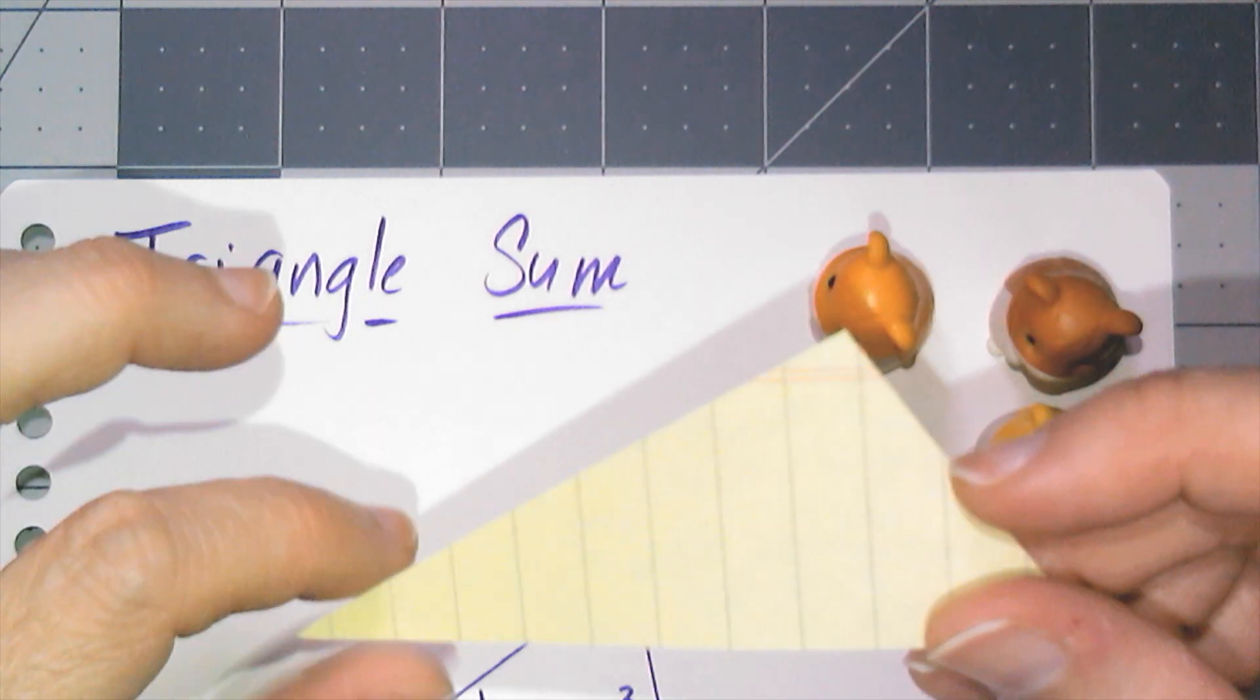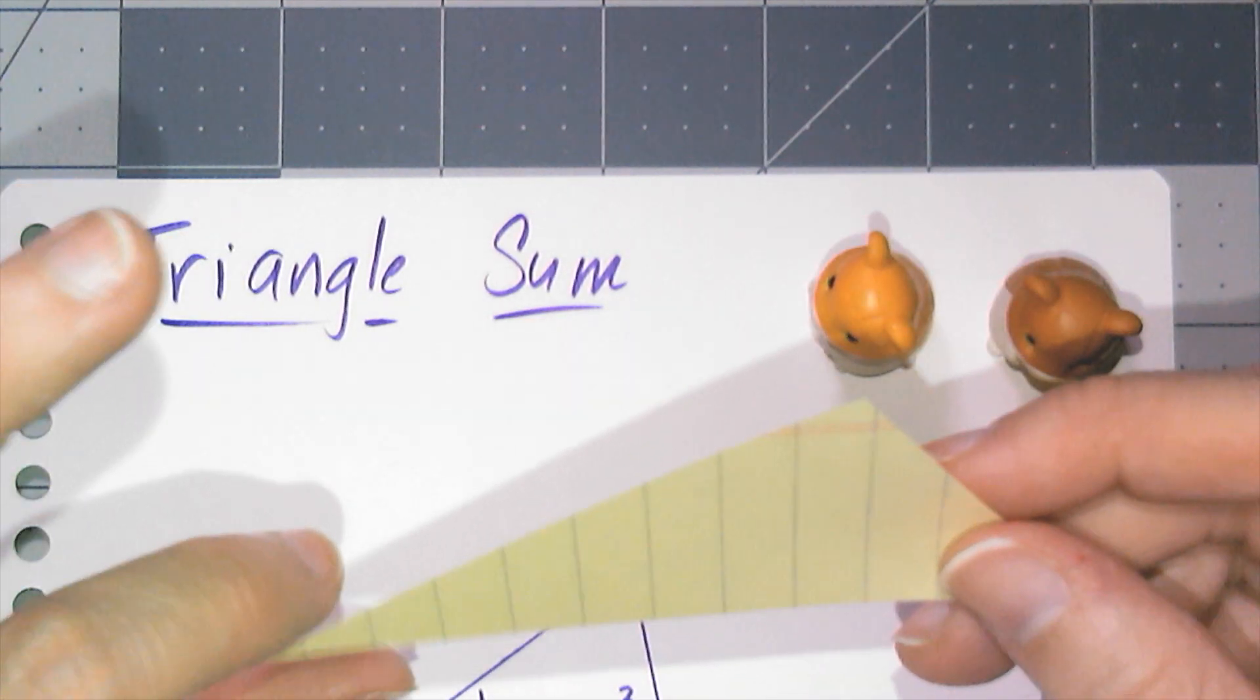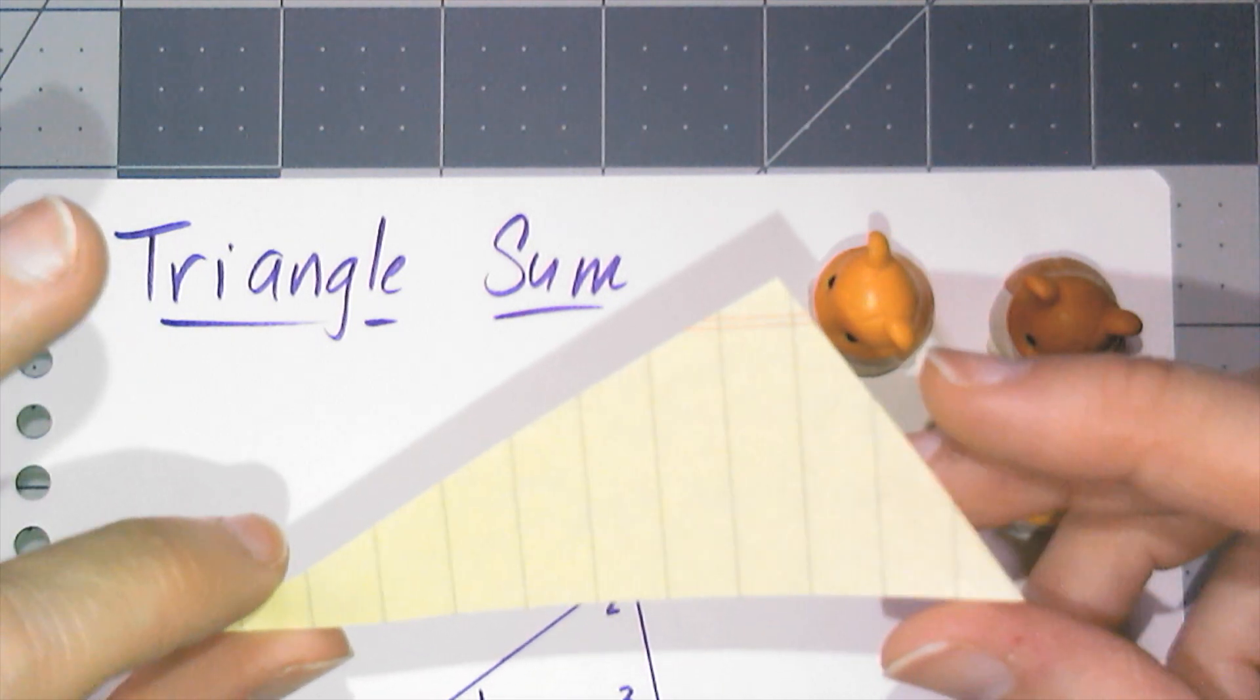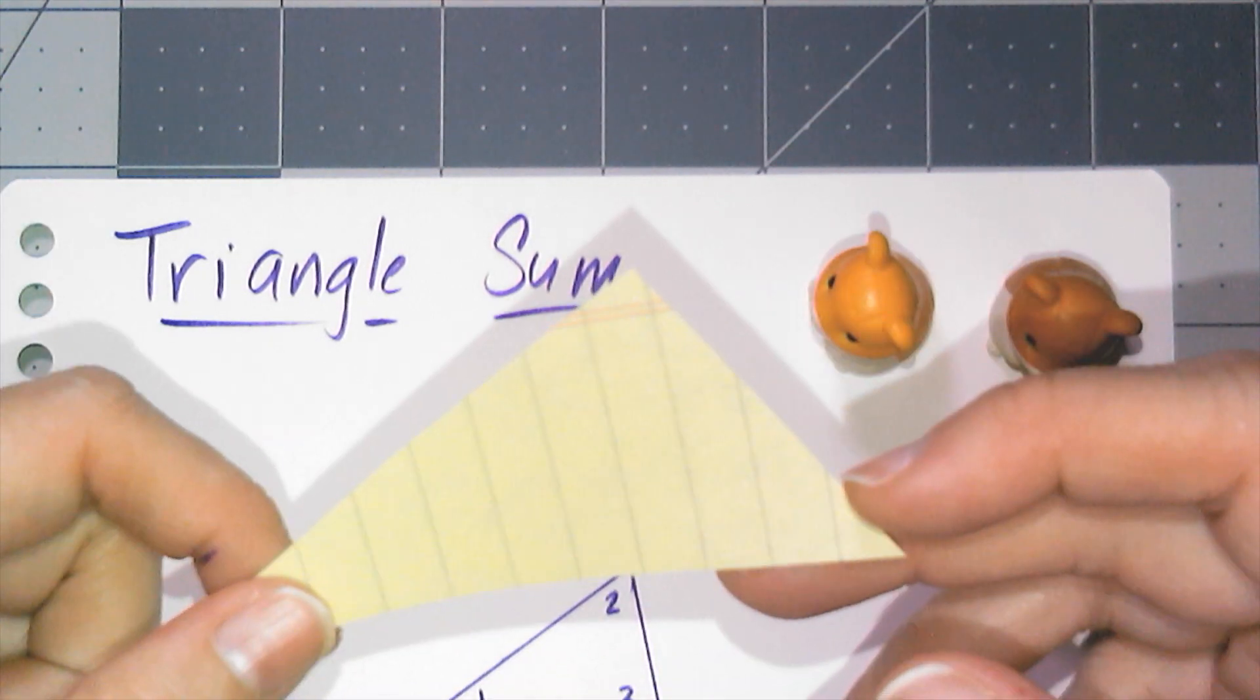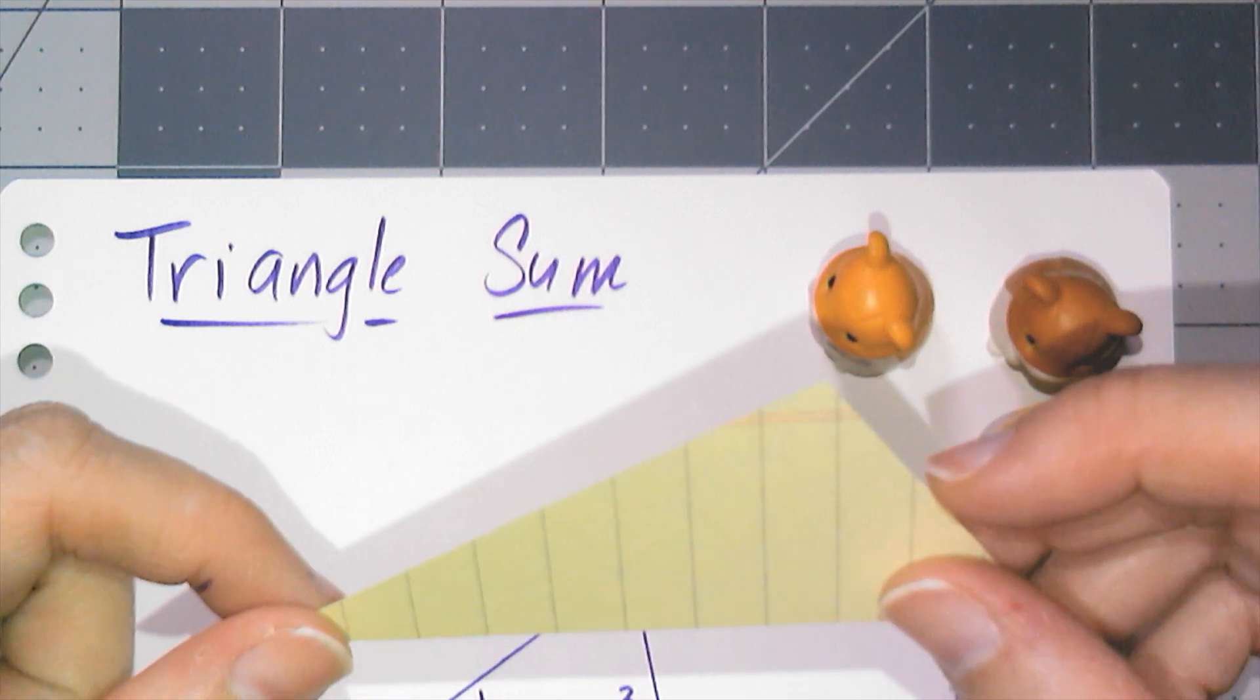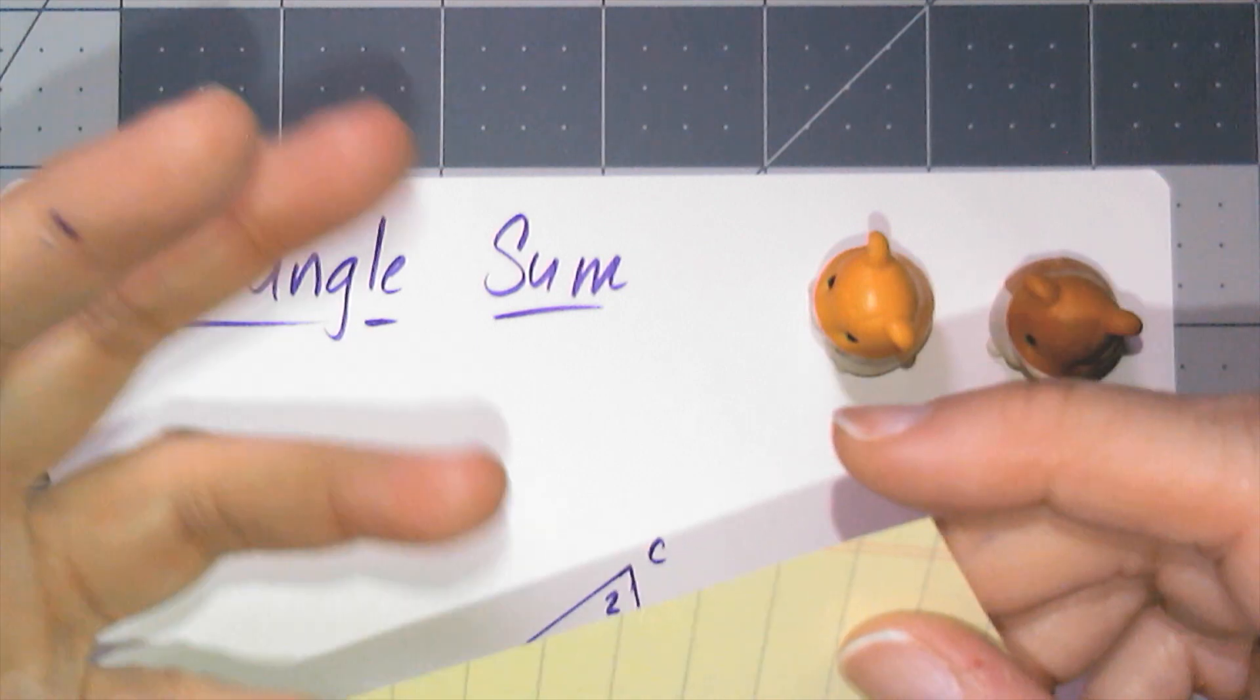Hello everybody, in this video we are going to look at the triangle sum conjecture, and this is a conjecture that a lot of people are already familiar with and have used. What it says is that if I add up the three angles of a triangle, that sum is going to be 180 degrees.